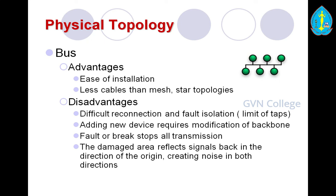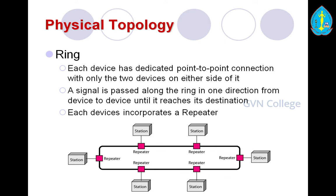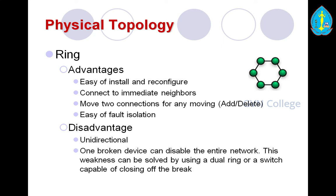Ring topology is another important concept. In a ring, each device has a dedicated point-to-point connection with only the two devices on either side of it. A signal is passed along the ring in one direction from device to device until it reaches its destination. Each device incorporates a repeater. Ring topology advantages: easy to install and reconfigure; connect to immediate neighbors; easy to add or delete nodes; easy fault isolation. Disadvantages: unidirectional flow can be a limitation; one broken device can disable the entire network. This weakness can be solved by using a dual ring or a switch capable of closing the break.